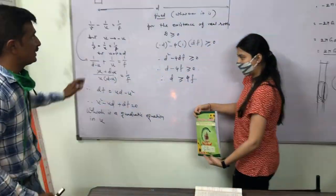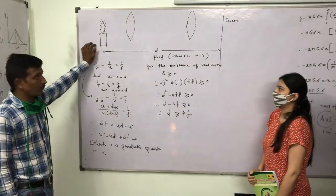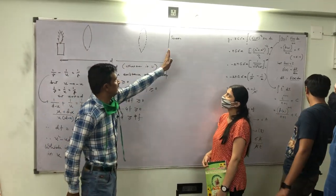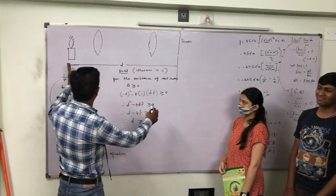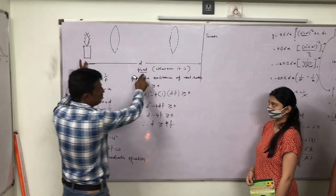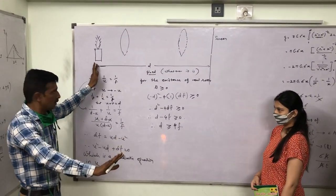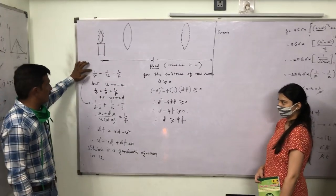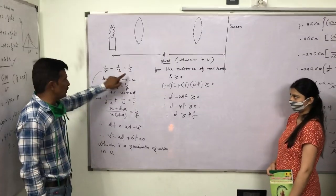Now the theory behind this. This one is the candle flame, and this one is the screen. We are fixing the distance between these two—say D, whatever it is, but it is fixed. The lens formula is 1/V - 1/U = 1/F.